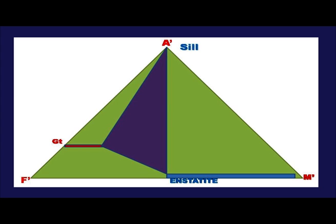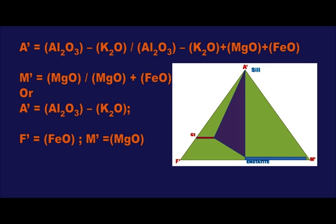For the A'-F'-M' projection, the calculation scheme is: A' equals (Al2O3 minus K2O) divided by (Al2O3 minus K2O plus MgO plus FeO). M' equals MgO divided by (MgO plus FeO). The advantage of this AFM projection is that it allows the variation in mineral chemistry with respect to the Fe/Mg ratio with changing metamorphic grade.